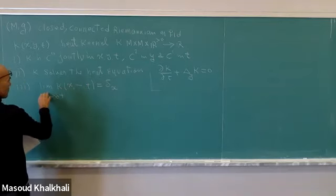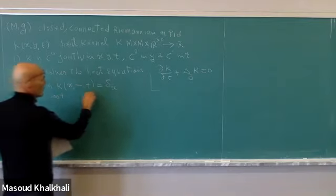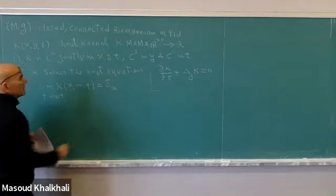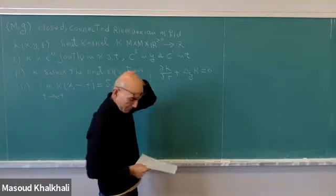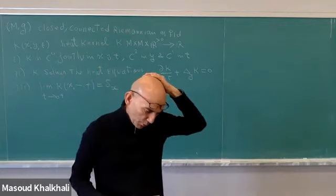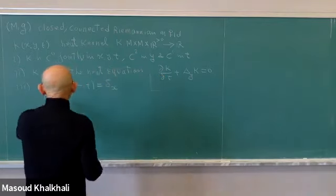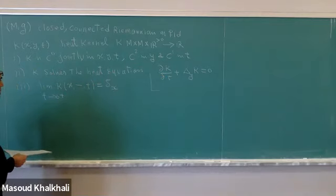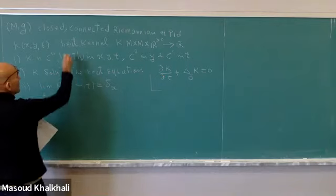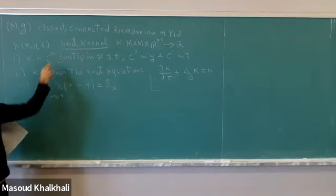A unit amount of heat is put at point x, so the temperature at that point is infinite, but immediately after, the temperature everywhere else is zero. Of course this is a fictional idea, but it's a good fiction. This was called the heat kernel, also called the fundamental solution of the heat equation.